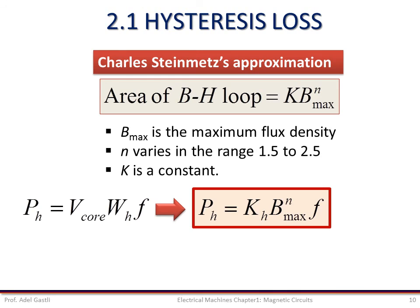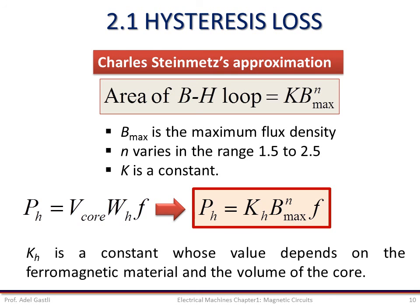Using this approximate equation, we can rewrite the power loss equation as KH multiplied by Bmax to the power n, multiplied by the frequency of the current. Here, KH is a constant whose value depends on the ferromagnetic material and the volume of the core. Notice that the higher the frequency of variation of the current, the higher is the hysteresis loss, which means that for electrical machines operating at high frequency, the hysteresis loss cannot be neglected.